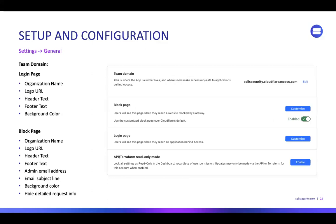You're going to set up a team domain. They give everybody a launch page at dot cloudflareaccess.com — ours is solacesecurity.cloudflareaccess.com. You choose your own. You can do a block page, login page customization, your logos and colors. On the block page, you can actually say where people should call for support, because when you start adding blocking things, someone needs a way to find out who blocked them.